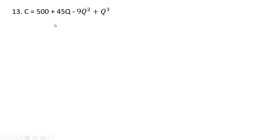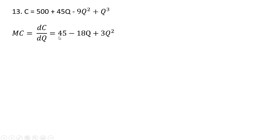Here we have another cubic type cost equation, but this time we have a minus sign in front of the q squared term. Marginal cost will be given as follows. The derivative of 500 is 0. The derivative of 45q is 45. The derivative of minus 9q squared is minus 18q. And then the last term here gives us 3q squared.